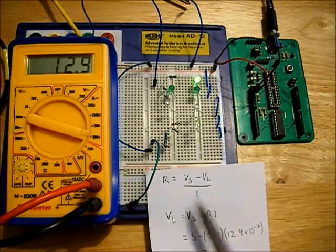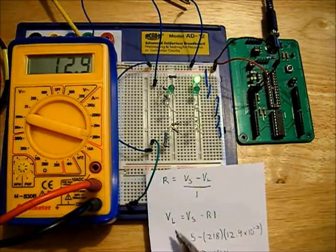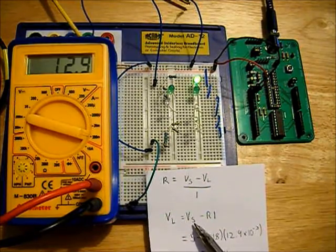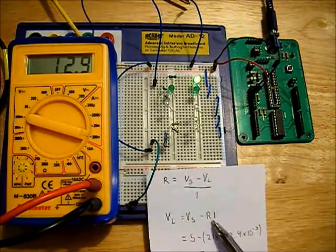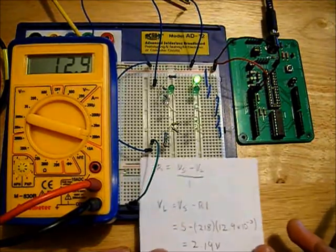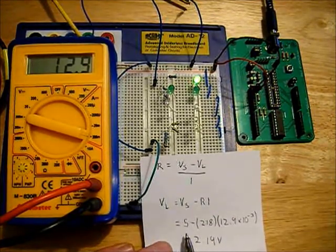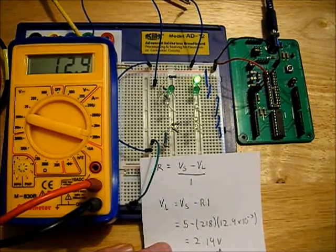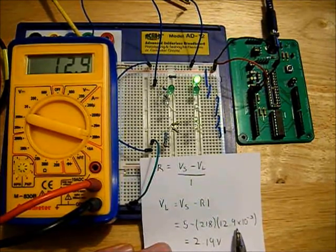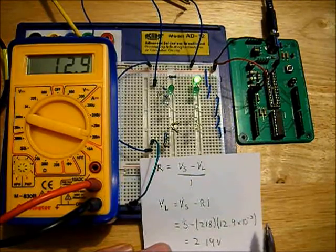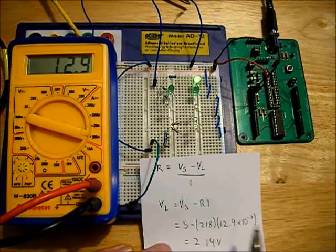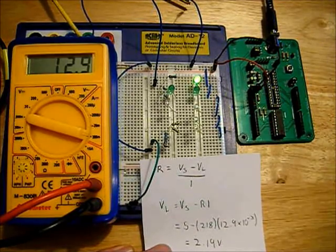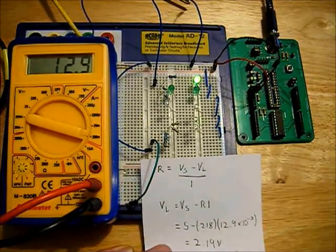So then I can rearrange my equation to be the LED voltage equal to the supply voltage minus the resistance by the current. So filling that in, I have 5 volts minus the 218 ohms multiplied by 12.9 by 10 to the minus 3 amps. If they have amps, they are not milliamps. That means that the LED voltage is around about 2.19 volts.